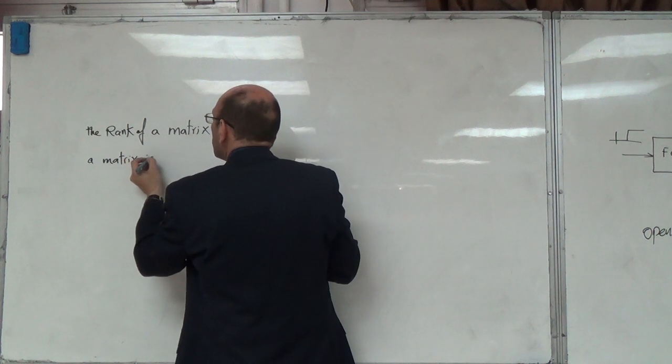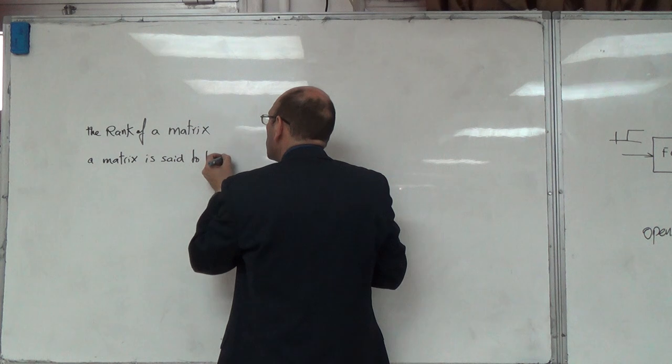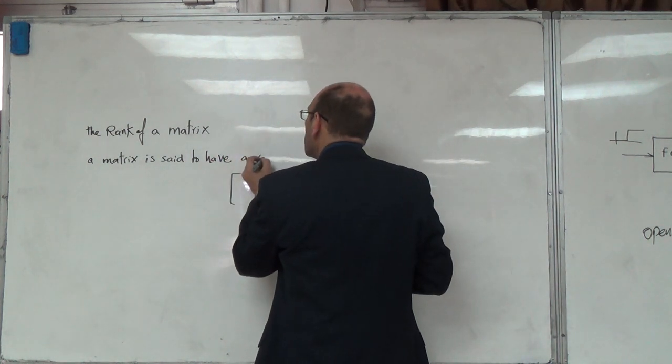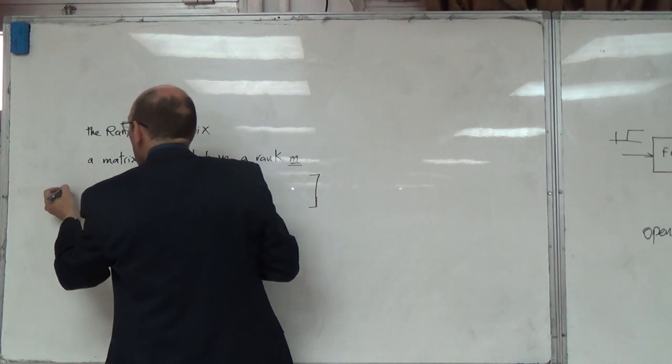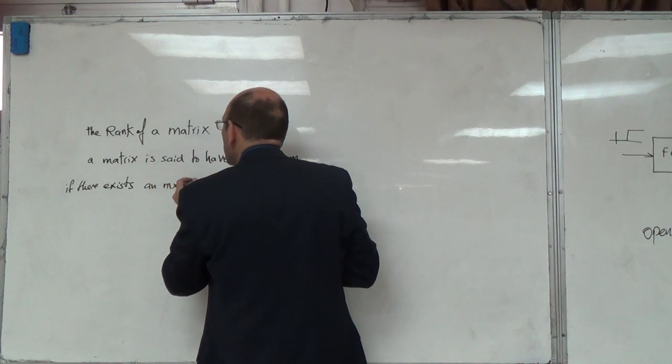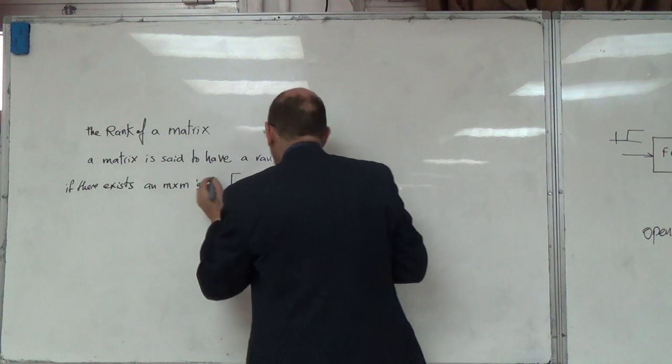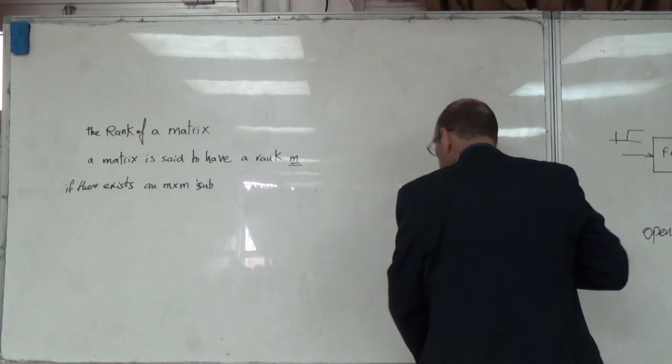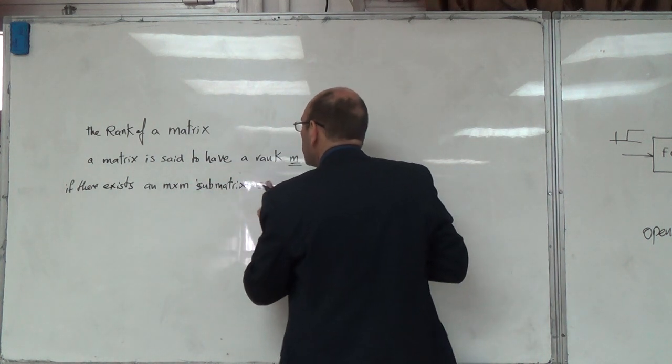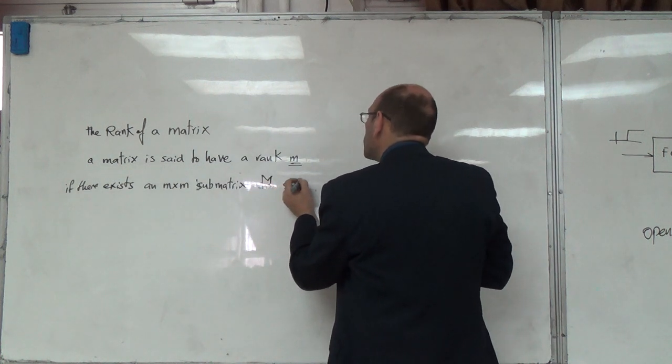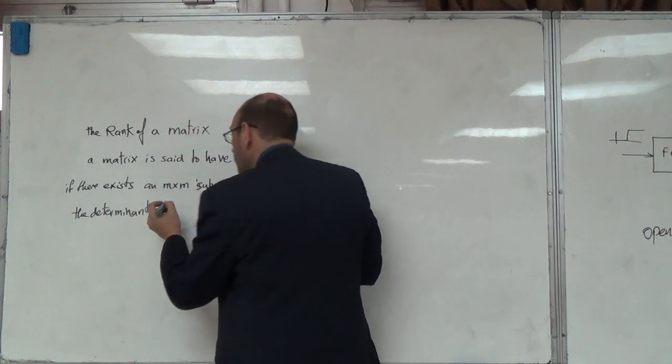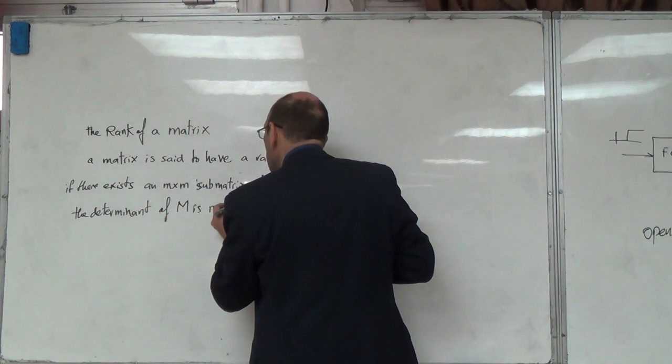It's said to have a rectangular matrix. You can have a rank of a rectangular matrix. It's an M by M sub-matrix - we're going to call it capital M, such that the determinant of M is non-zero.